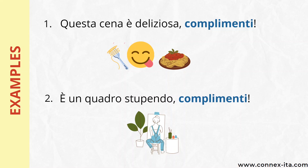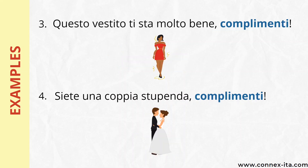The first example is something you can say when someone cooked a delicious dinner for you. The next one is to show your appreciation for a beautiful painting. Then you can say a compliment when someone's wearing a dress that really suits them. The next one means that two people are a splendid couple: siete una coppia stupenda — complimenti.